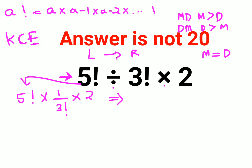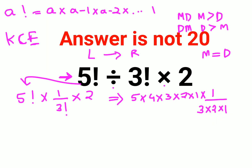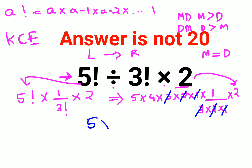So let's do this. We have 5 factorial, which can be written as 5 into 4 into 3 into 2 into 1, and then we have divided by 3 factorial, which is 3 into 2 into 1, and everything gets multiplied to this 2. Now things are cancelling — 3, 2, and 1 cancel out. So now I am left with 5 into 4 into 2, and the answer comes out to be 40.